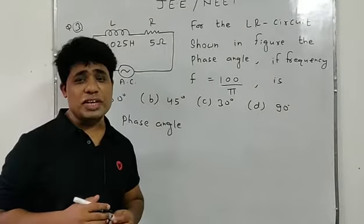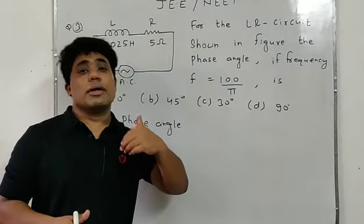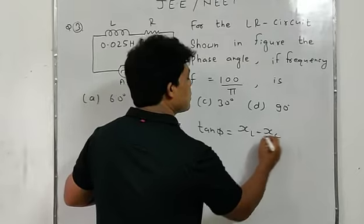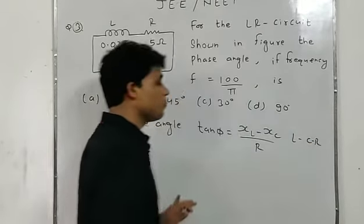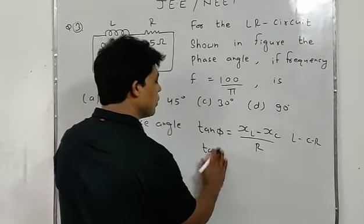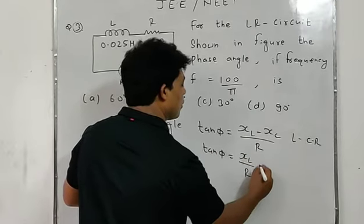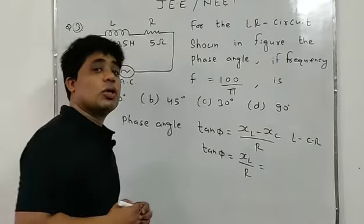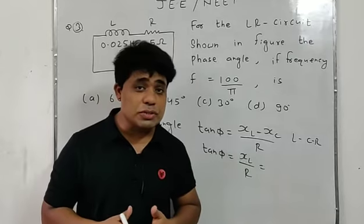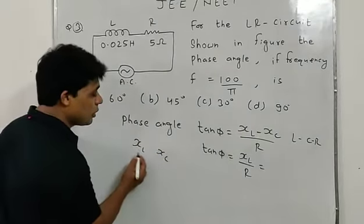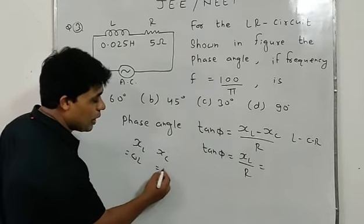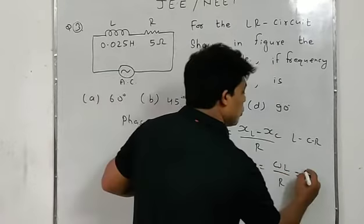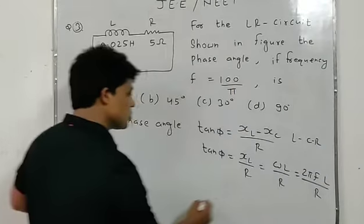The phase angle shows the difference between voltage V and current I. It is denoted by φ. Generally, tan φ = (XL − XC) / R for LCR series circuits. Since we have only L and R here, we use tan φ = XL / R. XL is the inductive reactance, equal to ωL.